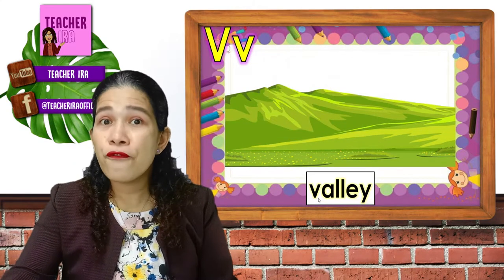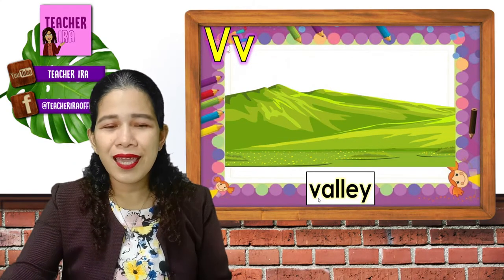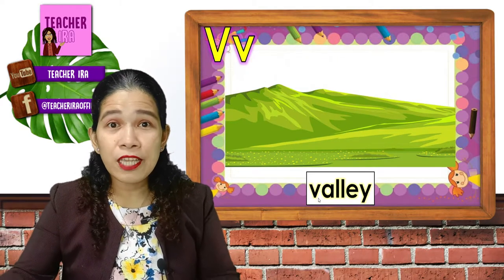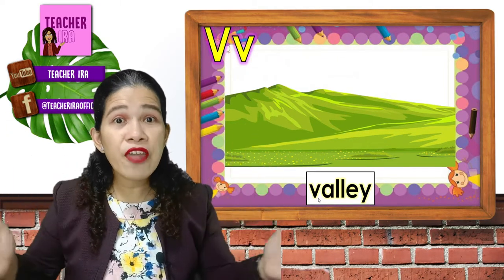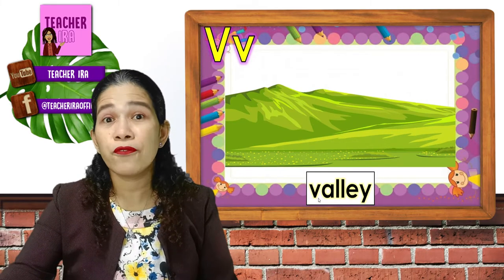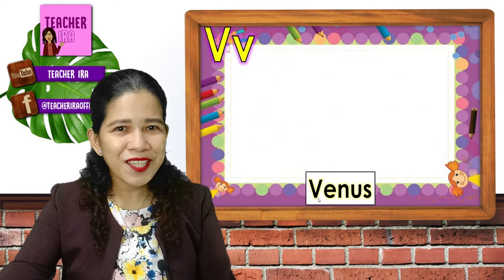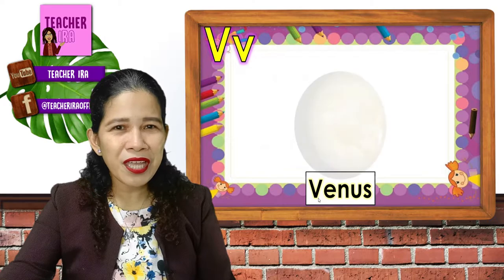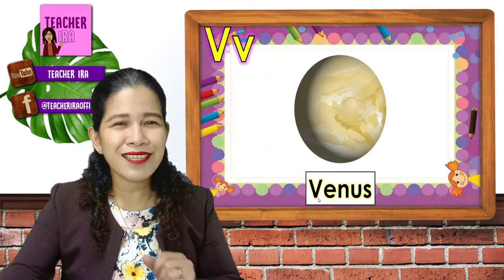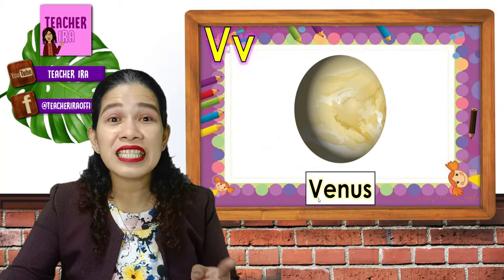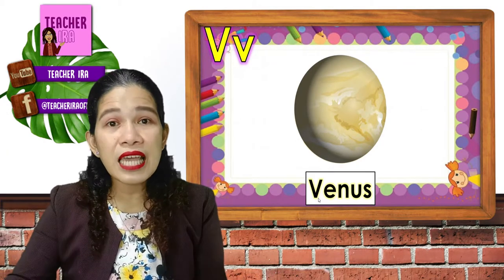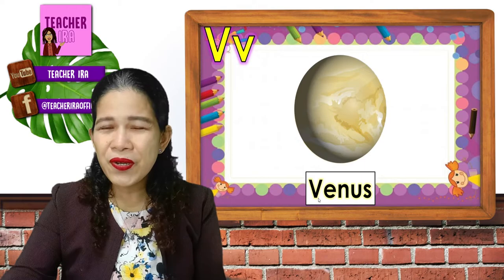Next is V, valley. You say V, valley. Valley is a flat land surrounded with mountains. That's another landform. That's V, valley. Next, what do you think is this one? Yes, it's the planet that is near to us. It's our neighboring planet. This is the planet Venus.